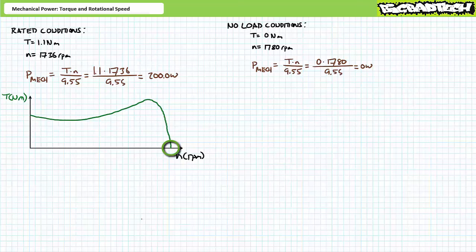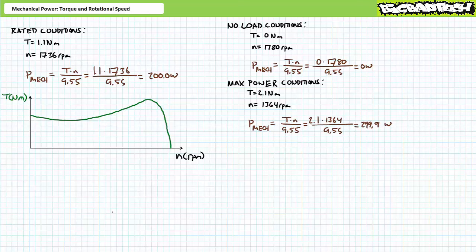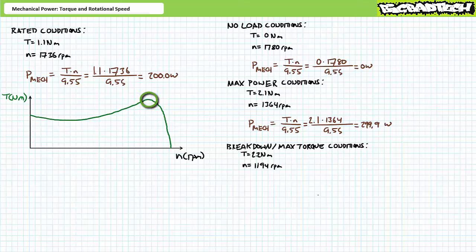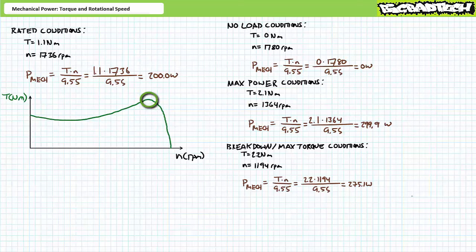At maximum power conditions, let's say the motor turns at 1,364 RPM and exerts 2.1 newton meters of torque. The motor is exerting roughly 300 watts — one and a half times the rated 200 watts. As long as it's not sustained, this 200-watt rated motor can briefly exert 300 watts. At breakdown or maximum torque — 2.2 newton meters at 1,194 RPM — the motor exerts roughly 275.1 watts. We're on the downslope of power. At locked rotor, 1.4 newton meters of torque at standstill results in zero watts — it makes sense, it's not moving.